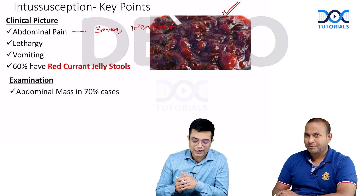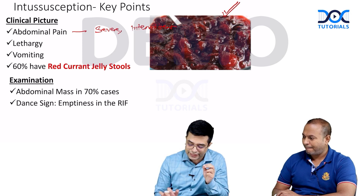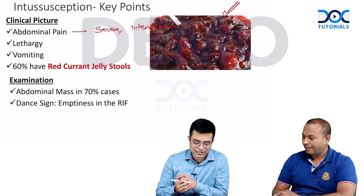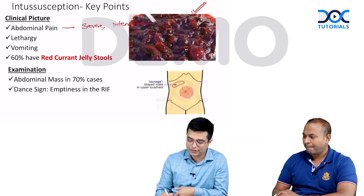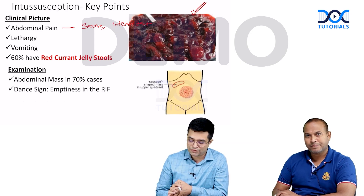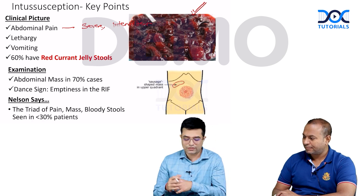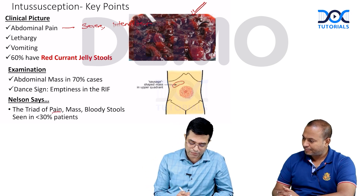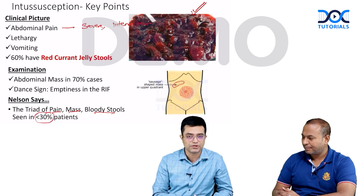On examination, you will find an abdominal mass in 70% of cases — a sausage-shaped abdominal mass with a concavity pointing towards the umbilicus, typically located in the right upper abdomen. There is also Dance's sign, which indicates emptiness in the right iliac fossa. Nelson notes that the classic triad of pain, mass, and bloody stool is actually seen in less than 30% of pediatric patients.